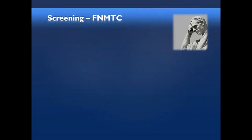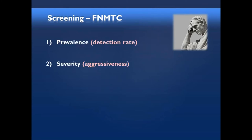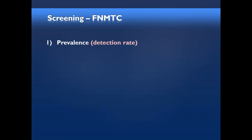When we think about familial disease, how is it different? We can think of two areas to explore. First is prevalence — what's the detection rate? But even more important is severity. So let's talk about these two topics within screening, and then later we'll ask ourselves whether we need to treat these patients differently. So in terms of prevalence,